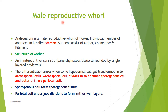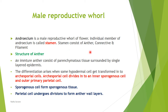Androecium is the male reproductive whorl of a flower, and the individual member of androecium is called a stamen. A stamen consists of anther, connective, and filament. The anther may be dithecous or monothecous — if an anther has two lobes, it is called dithecous; if it has a single lobe, it is called monothecous.